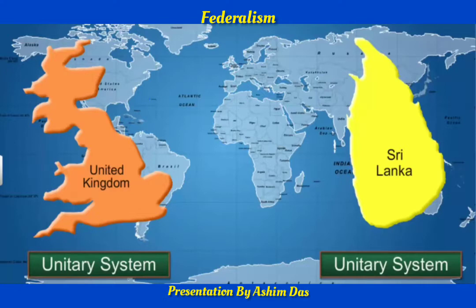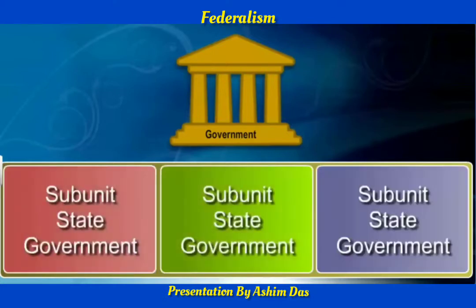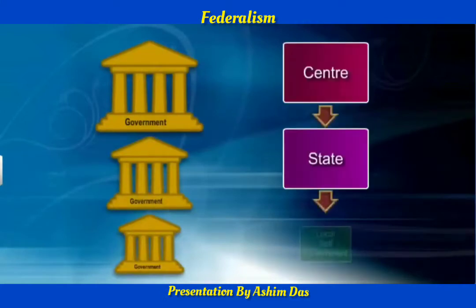Under a unitary system, there is only one level of government. There may be sub-units like state governments, but they are under the absolute subordination of the central government. Under the federal system, there are two or more tiers or levels of government.